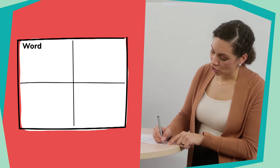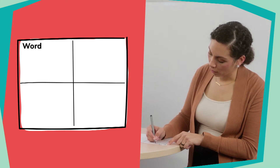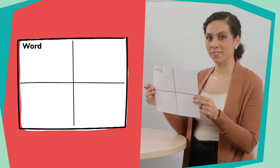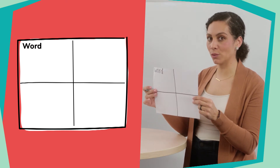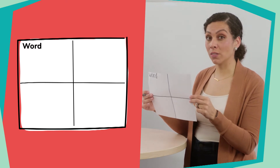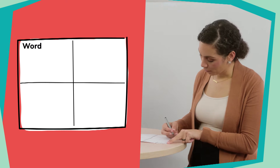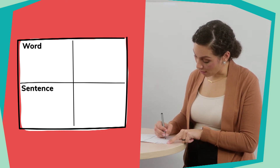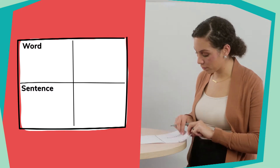Since we're working with vocabulary development today, let's write the word in our first box on the upper left-hand side, just like this. Make sure you have enough space to write your word. Now in the next box, we're going to write the word 'sentence' — it's going to be in our lower left-hand box, and that's where we'll write our sentence to go with our word, just like this.